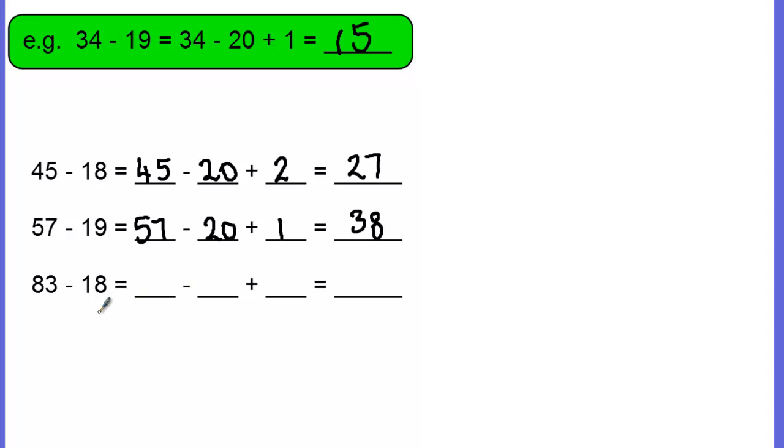OK, last one: 83 take away 18. This time I'll just cross this out to remind you that we're rounding it up to 20. And we've rounded it up using the total of 2, so 18 and 2, so it's 83 take away 20, add 2, which is what we used to round up the 18.